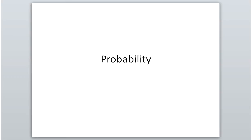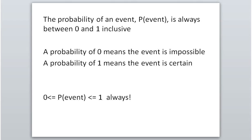Today we're going to talk about section 7A, specifically probability. There will be another video to talk about odds. The probability of an event tells us the chance that it will happen, and the probability is always a number between 0 and 1. If the probability is 0, that means the event is impossible — for example, rolling a 7 on a six-sided die.